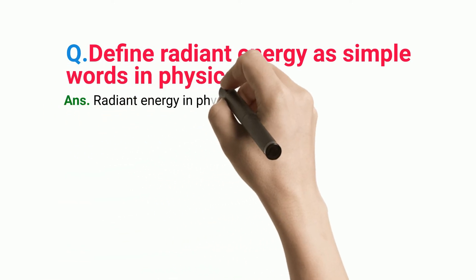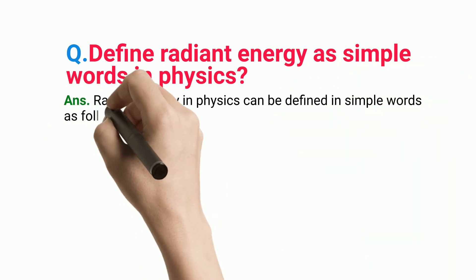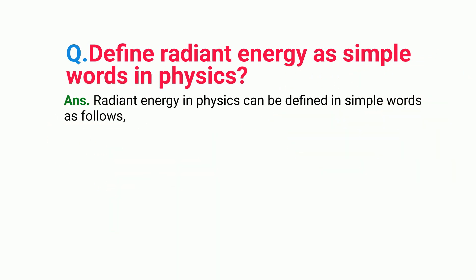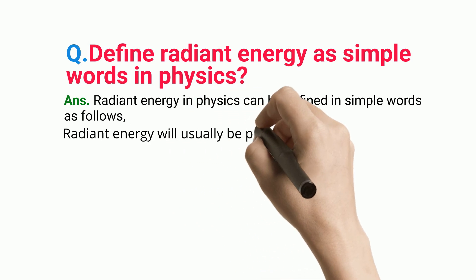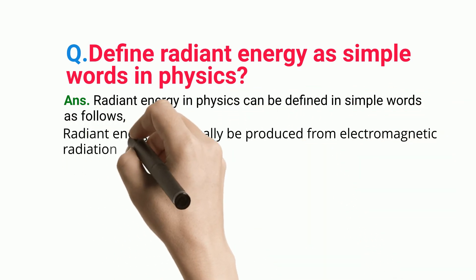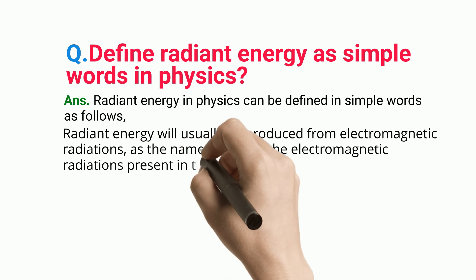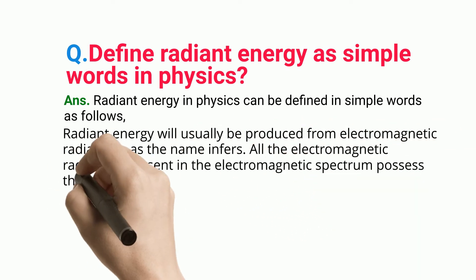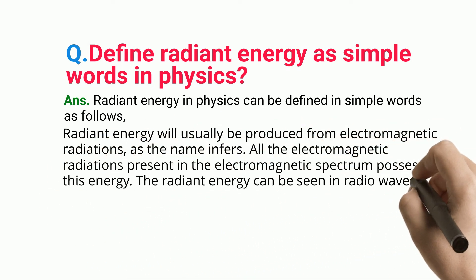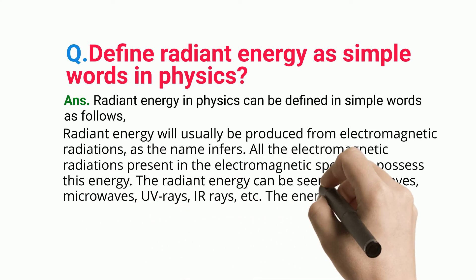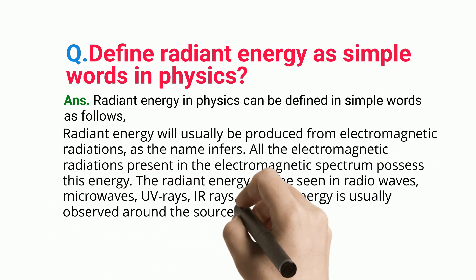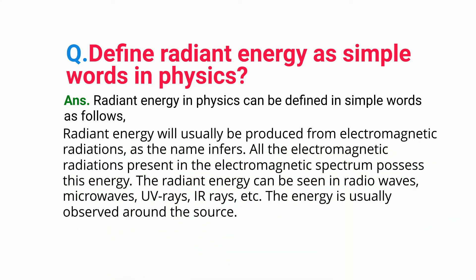Radiant energy in physics can be defined in simple words as follows. Radiant energy is usually produced from electromagnetic radiations. All the electromagnetic radiations present in the electromagnetic spectrum possess this energy. Radiant energy can be seen in radio waves, microwaves, UV rays, IR rays, etc. The energy is usually observed around the source.